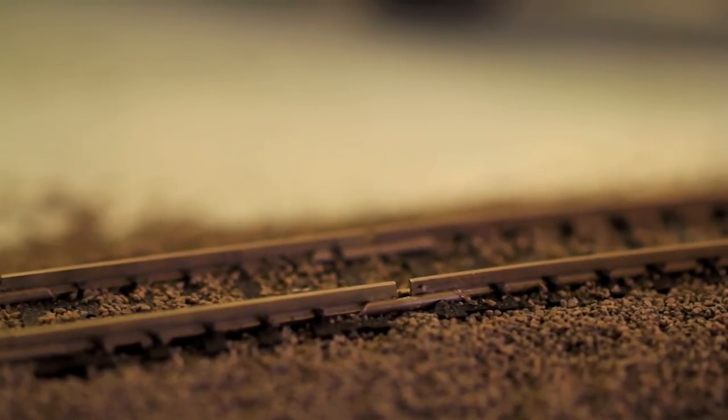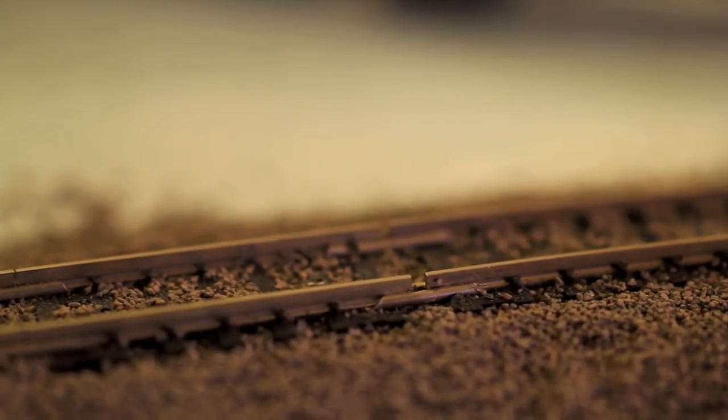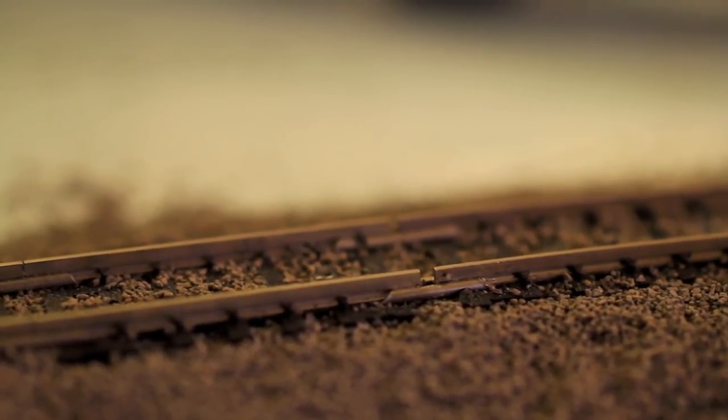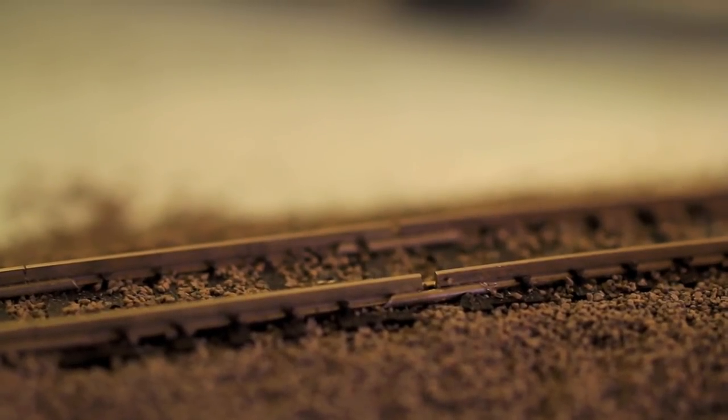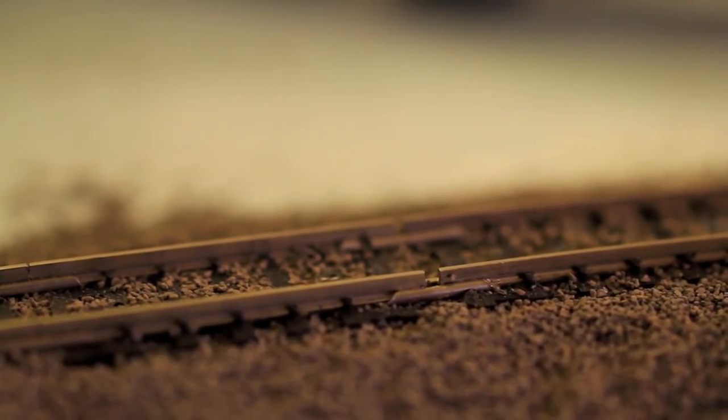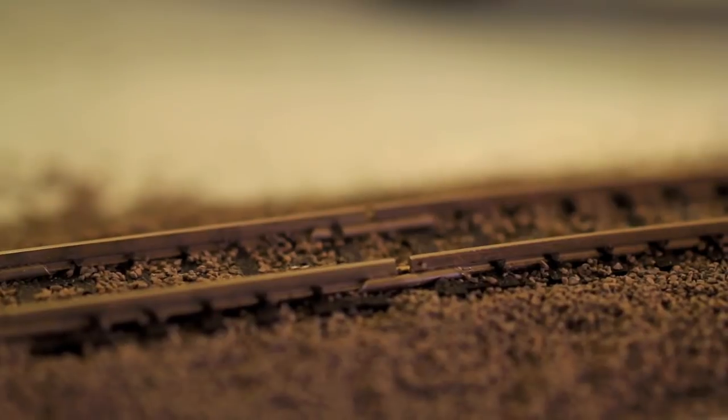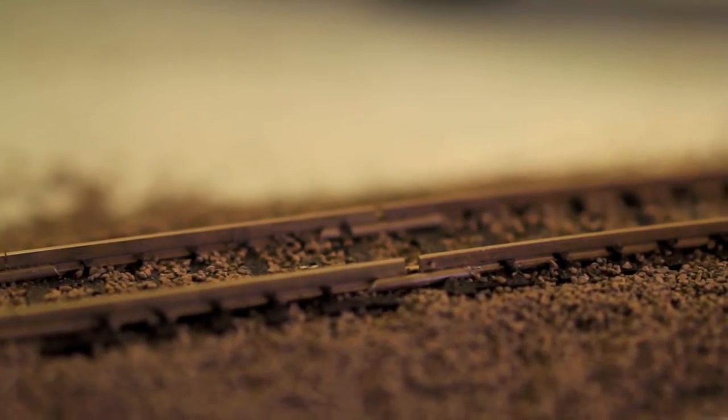Which would maybe make sense, except that it's always worked with this gap in the tracks. I've had to clean the tracks a few times ever since I started ballasting and adding scenery to the line, but I've always been able to get the train to do the full loop since I started.